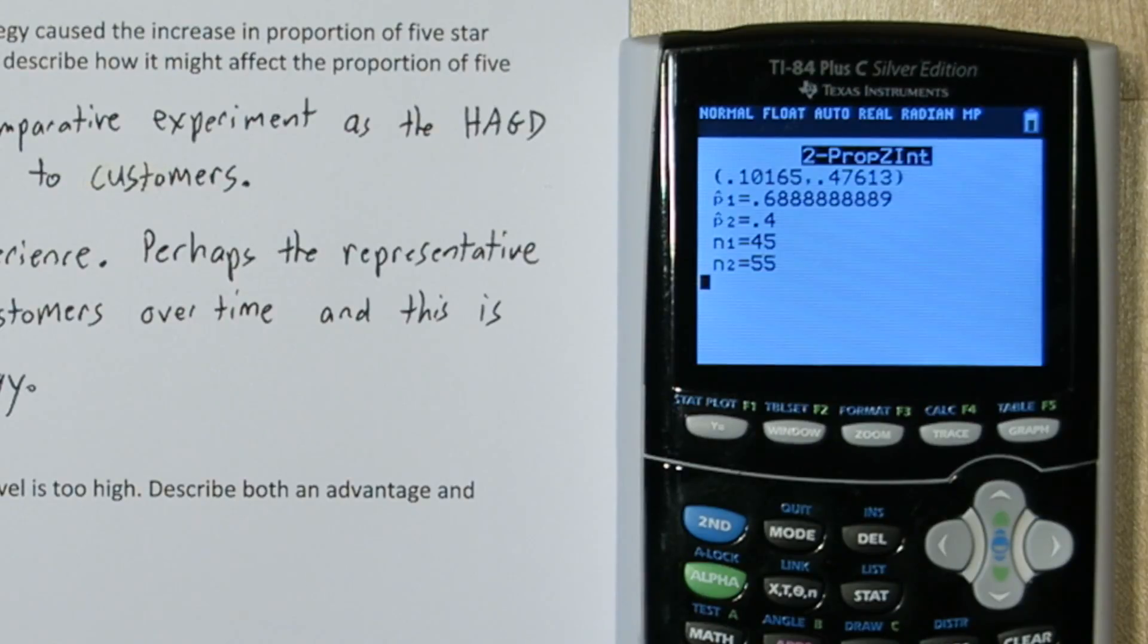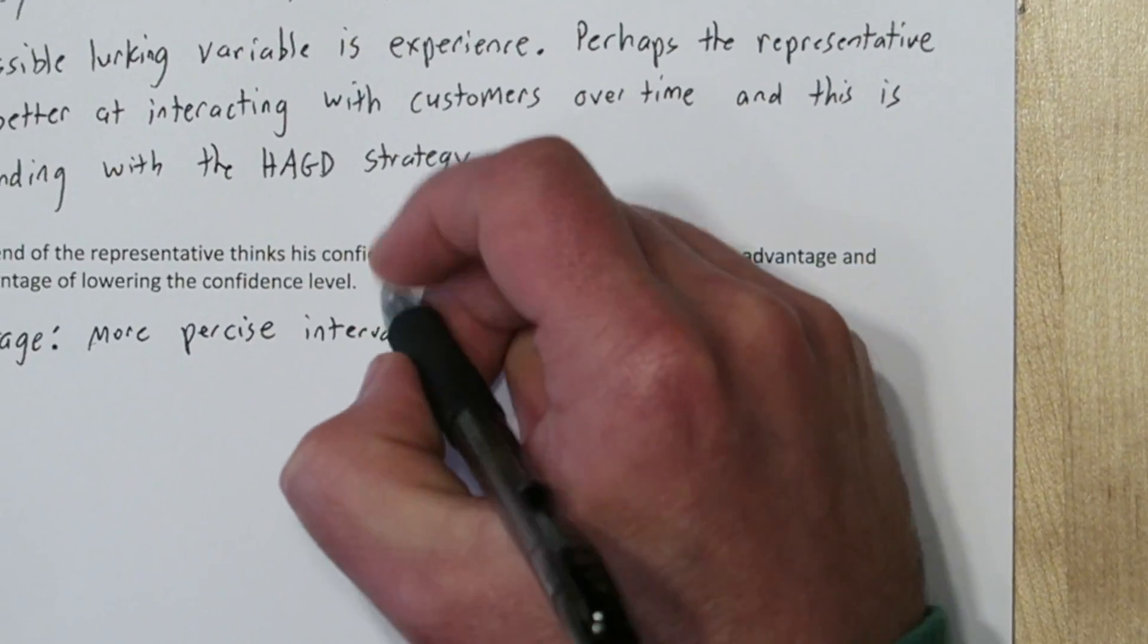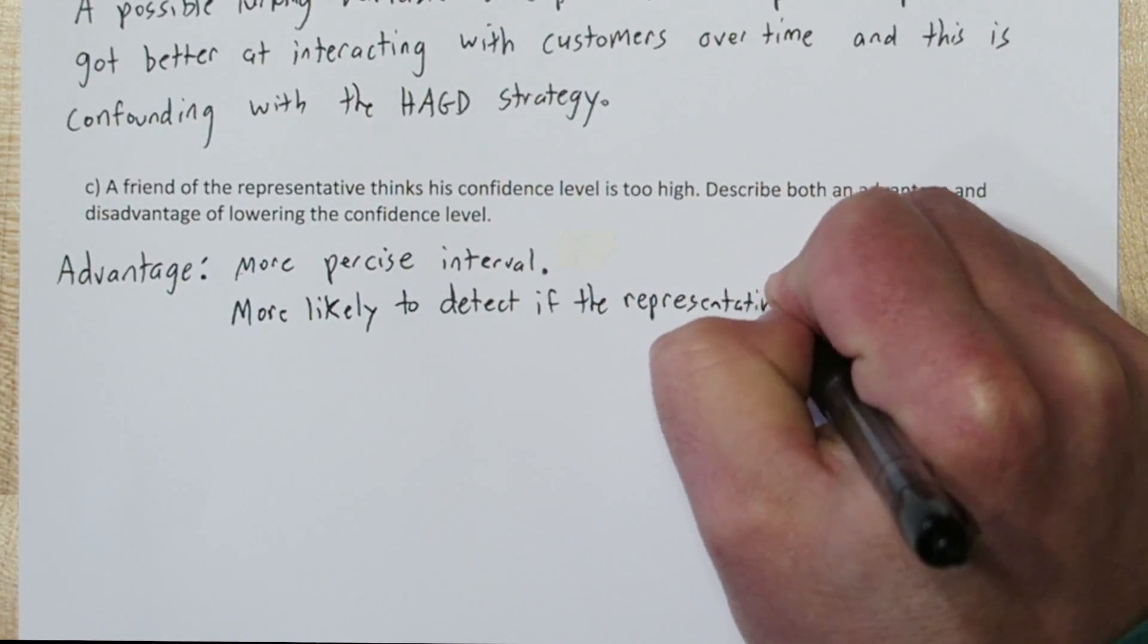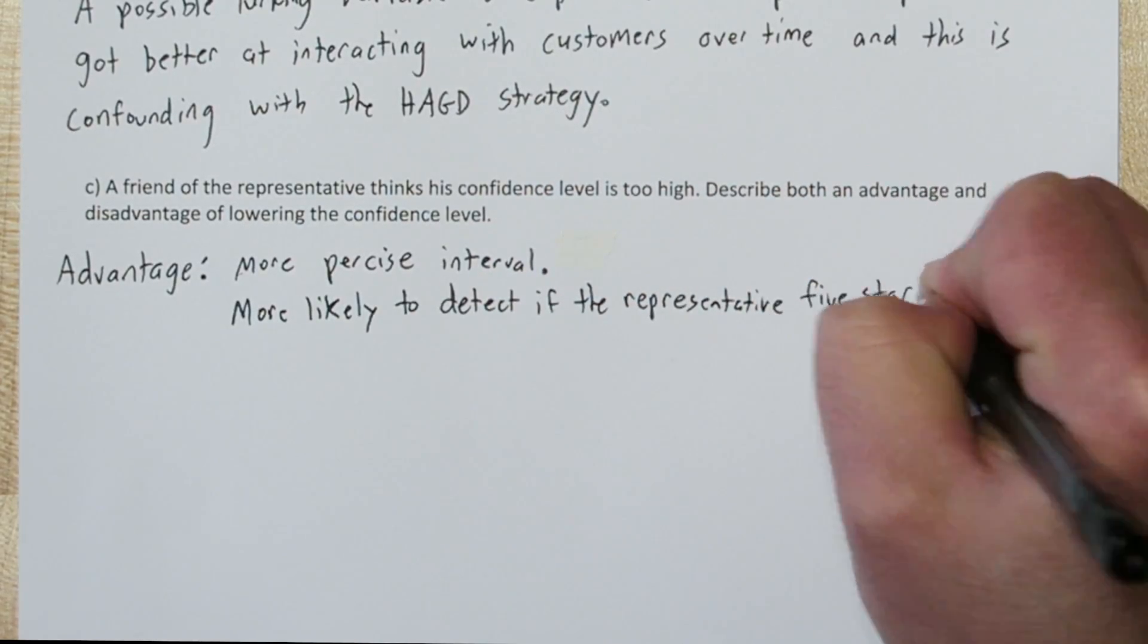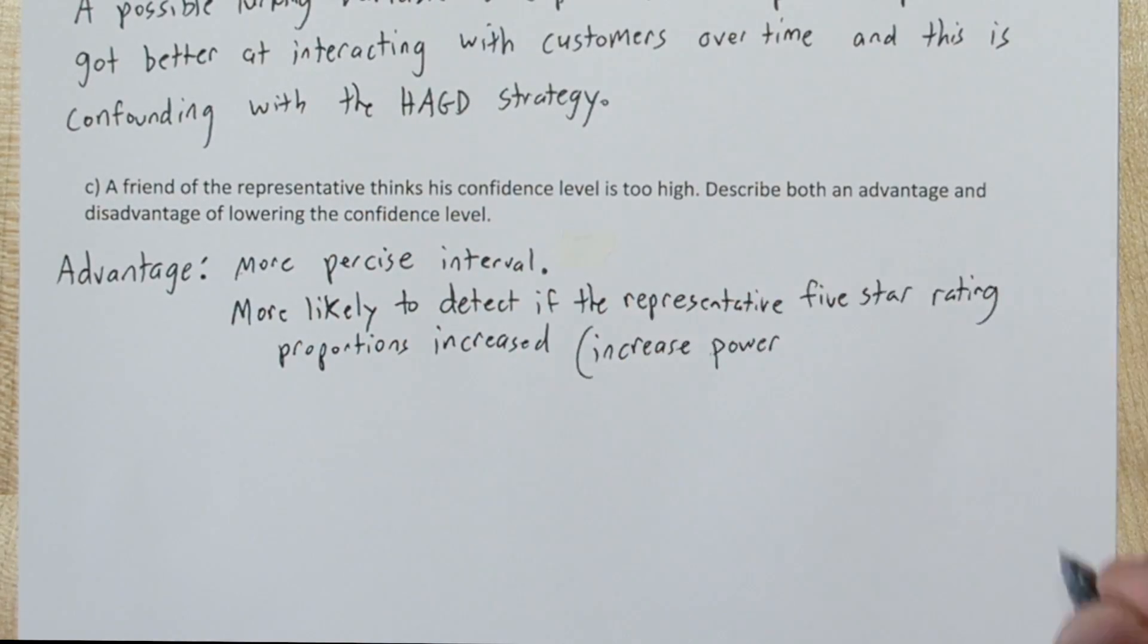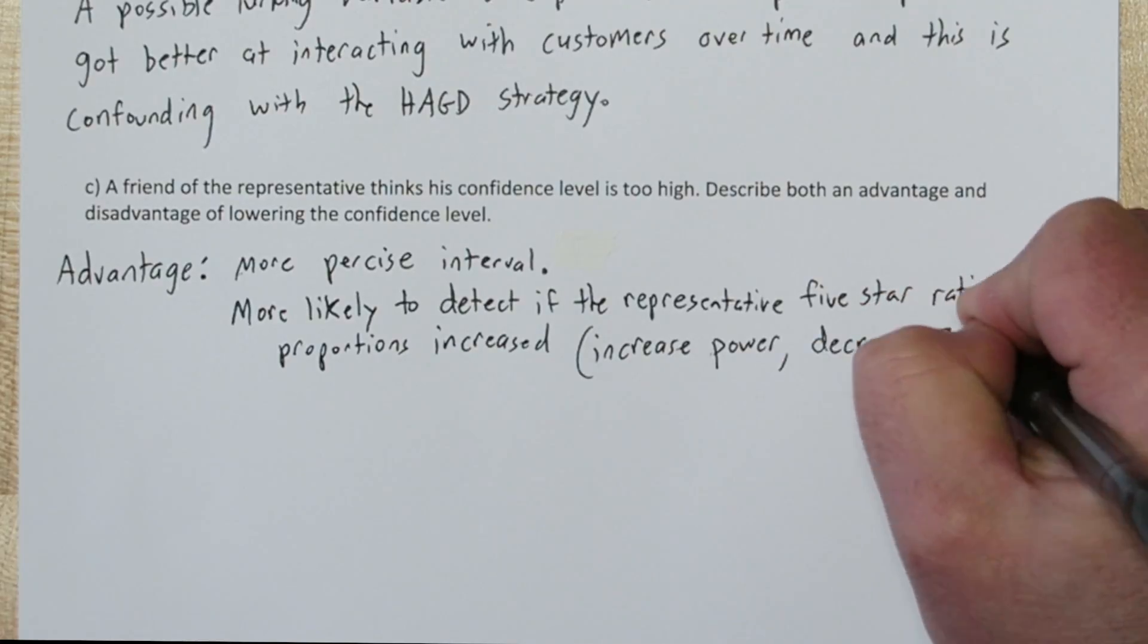So reducing confidence gives us a more precise interval. Confidence intervals are related to two-sided significance tests. So another advantage is if we decrease our confidence, we're more likely to detect if the representative's five-star rating proportions increased.